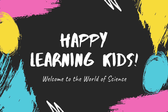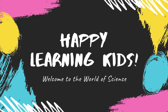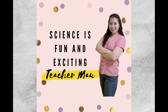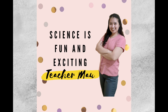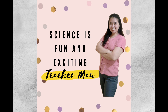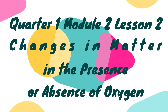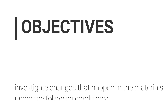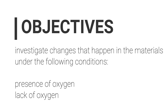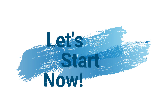Happy learning kids! Welcome to the world of science, where everything is fun and exciting. I am Teacher Mau, your teacher for today's lesson. Quarter 1, Module 2, Lesson 2: Changes in Matter in the Presence or Absence of Oxygen. In this module, we will be able to investigate the changes that happen in materials under the following conditions: Presence of Oxygen and Lack of Oxygen. Let's start now!